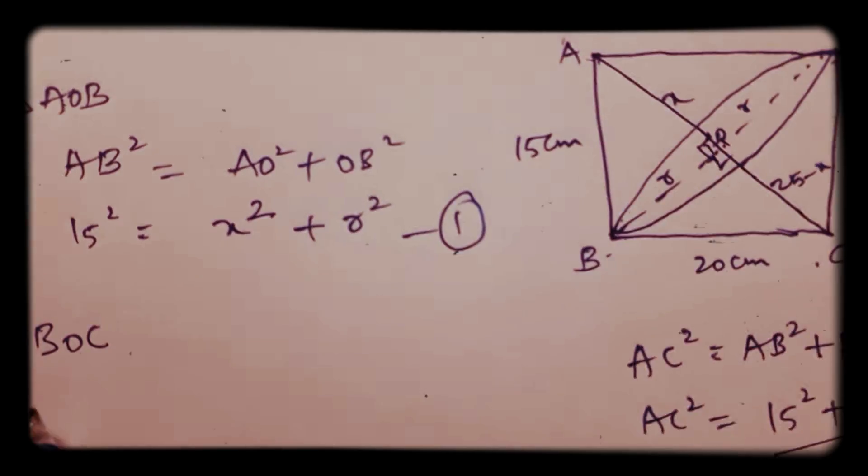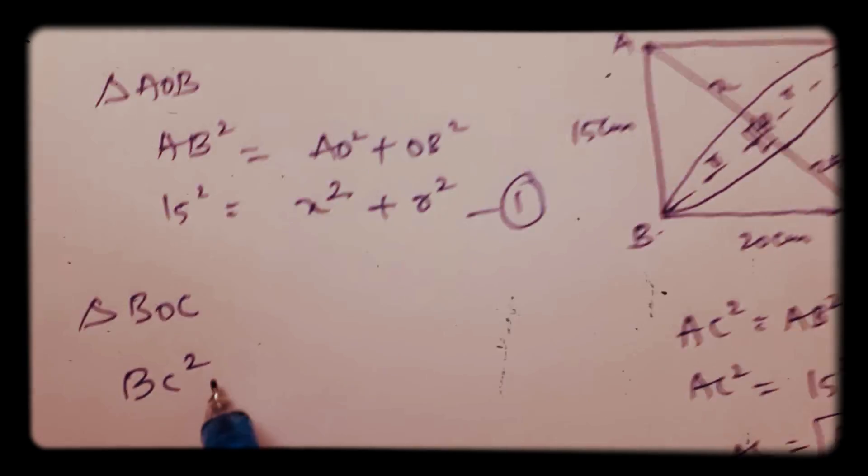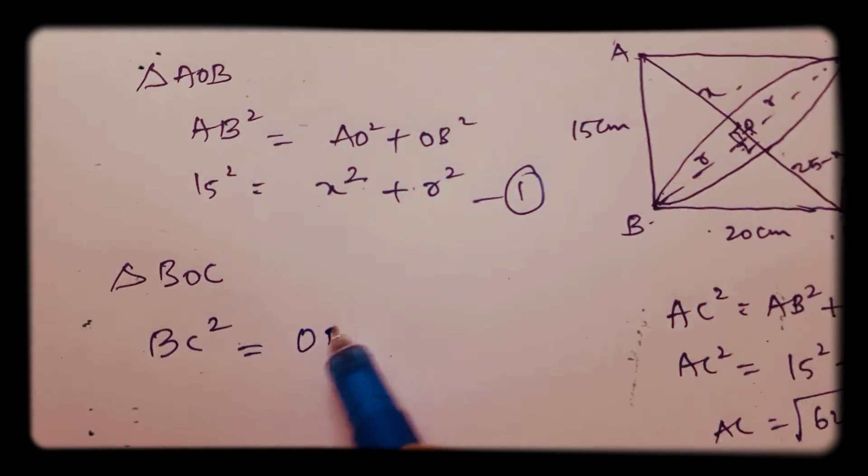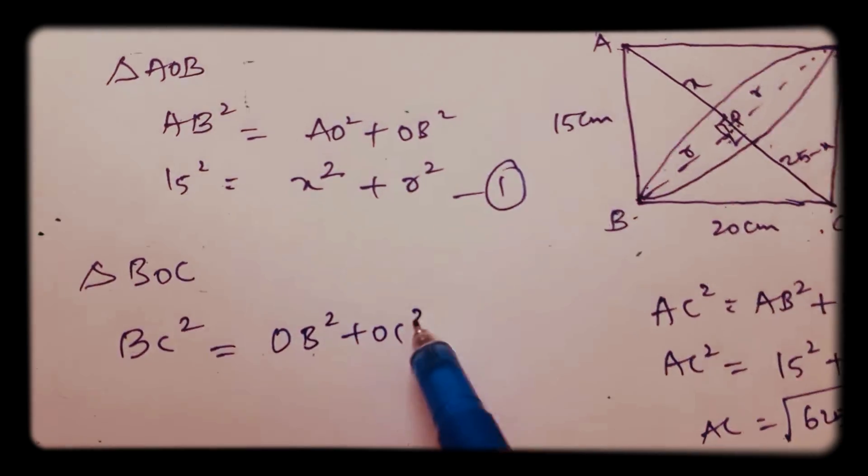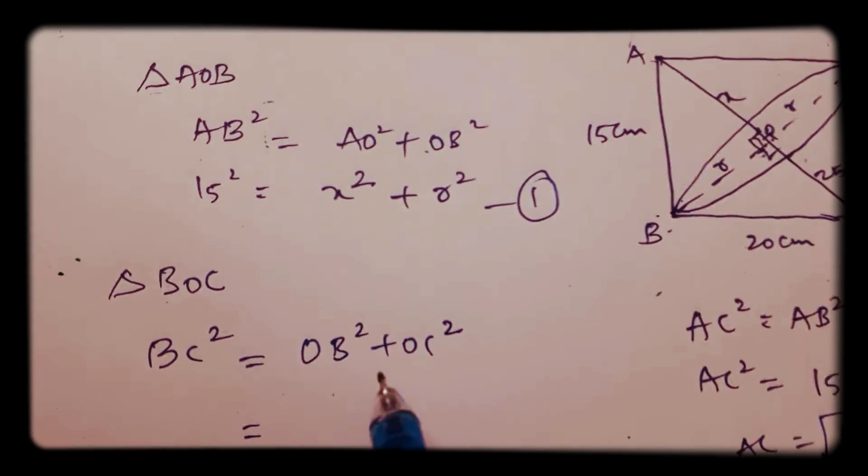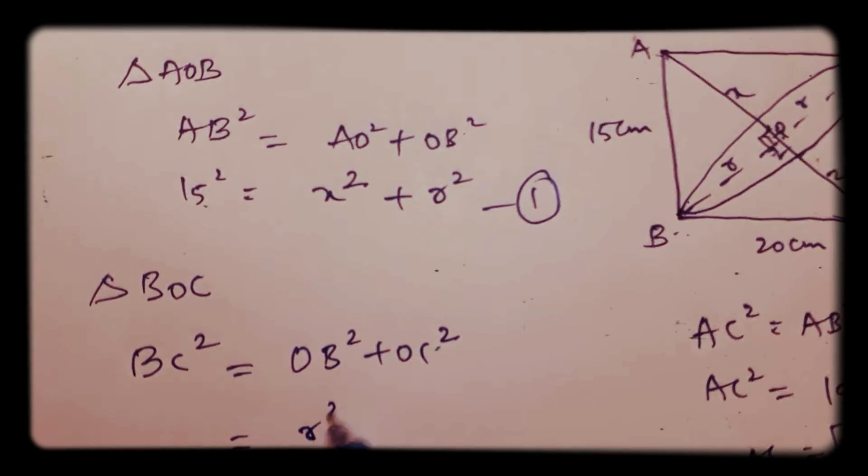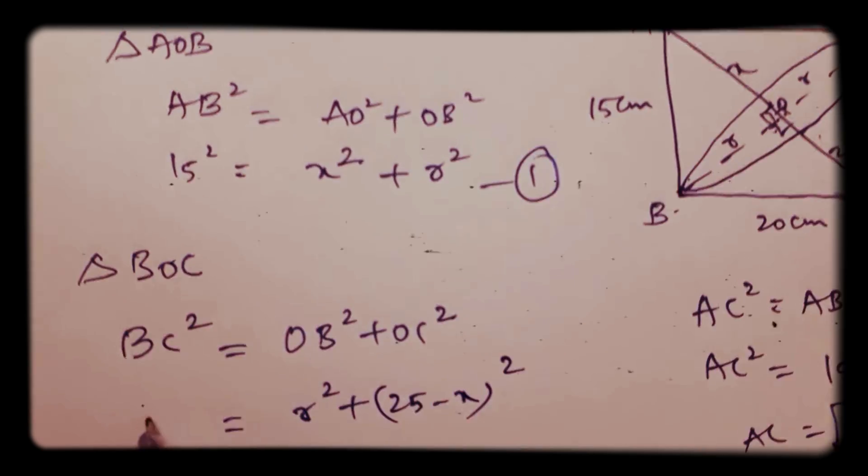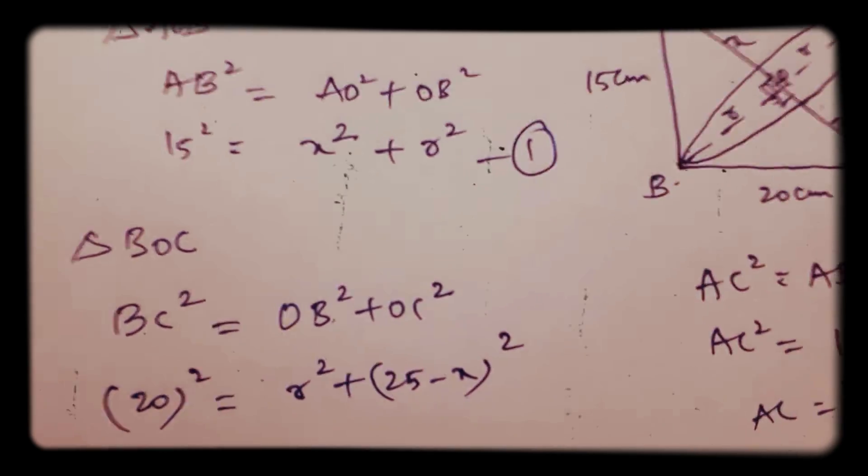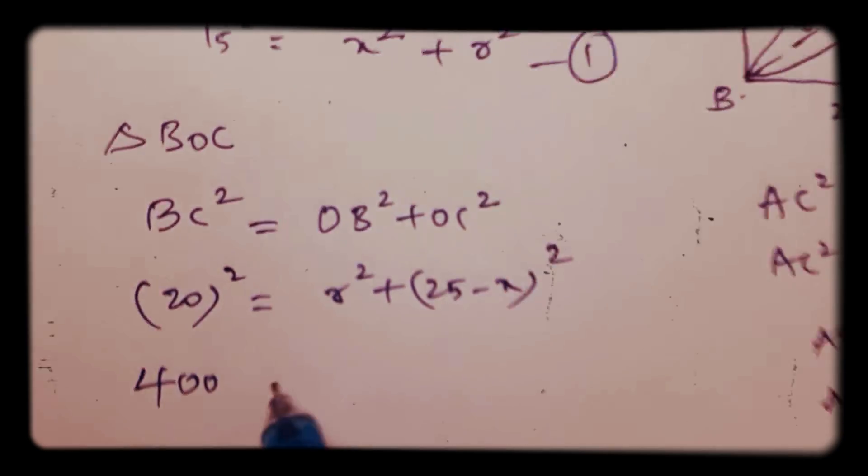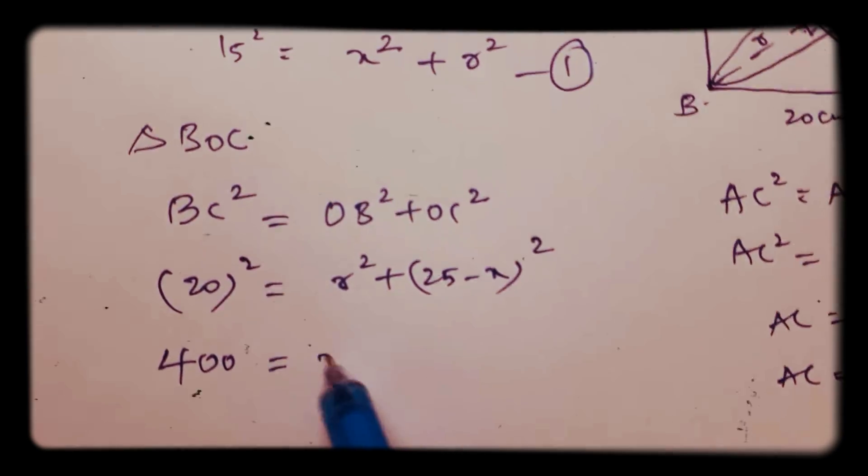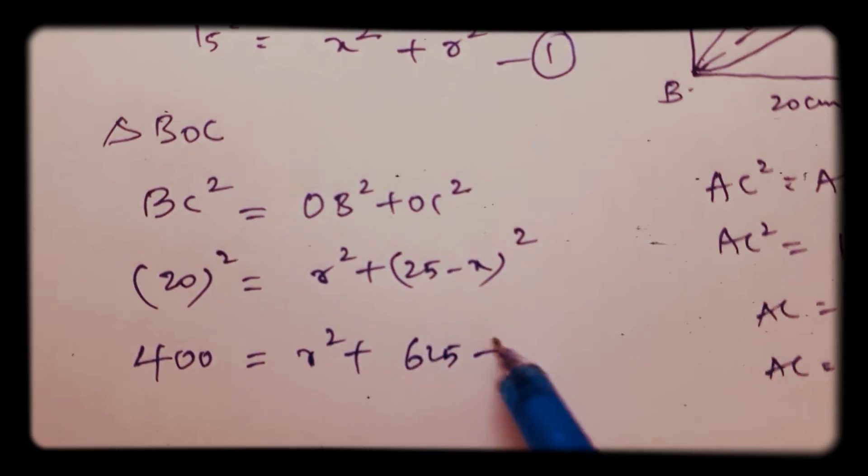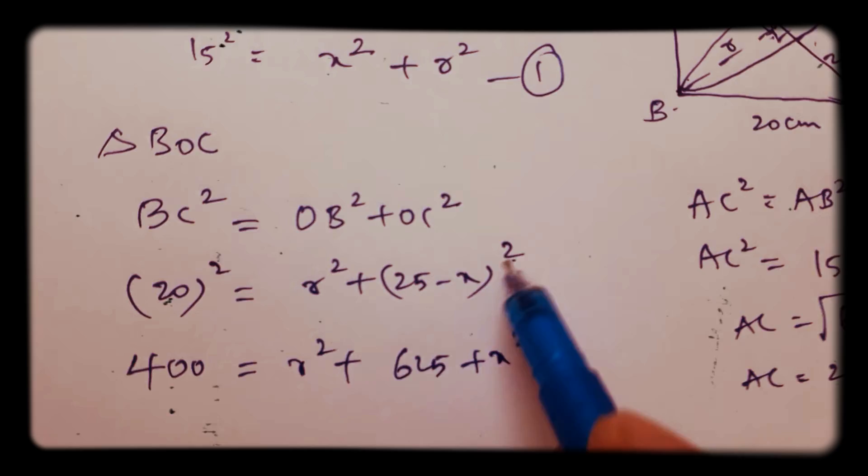BC square equals OB square plus OC square. So OB value is R square, OC is 25 minus X whole square, and BC is 20 square. So 400 equals R square, and A minus B whole square is A square plus B square minus 2AB.